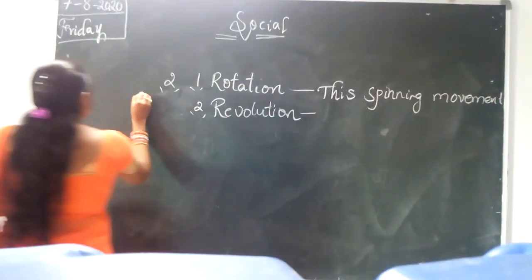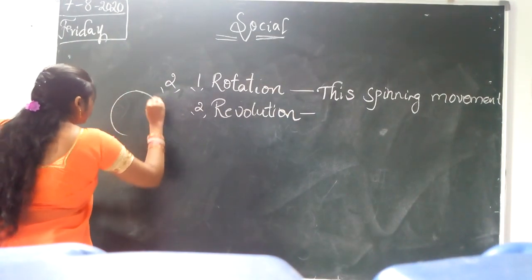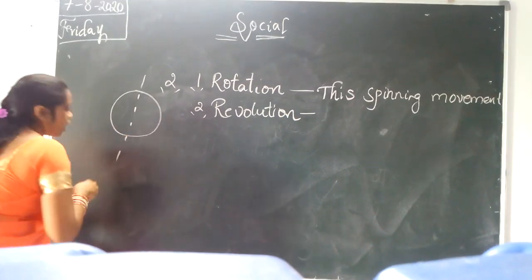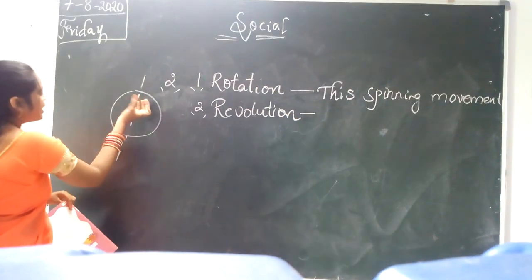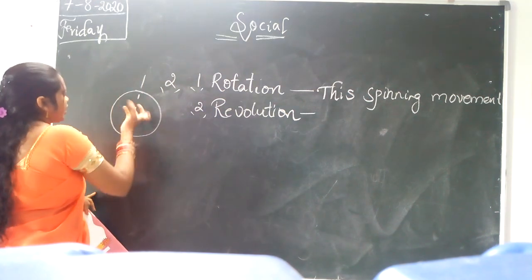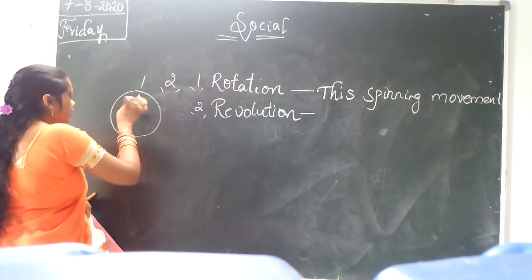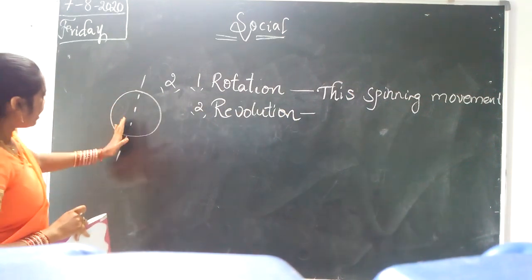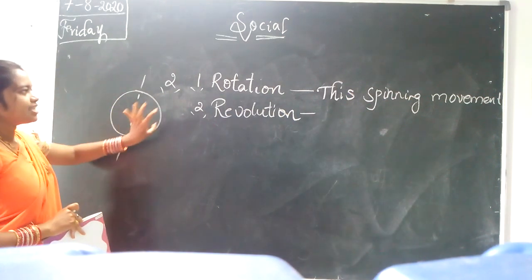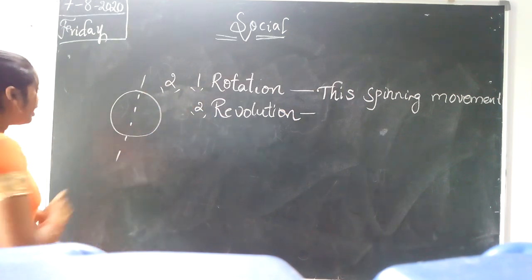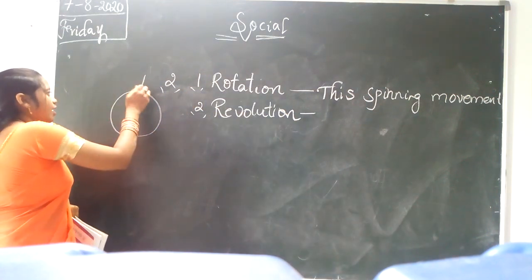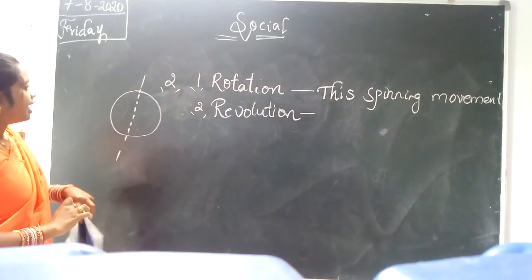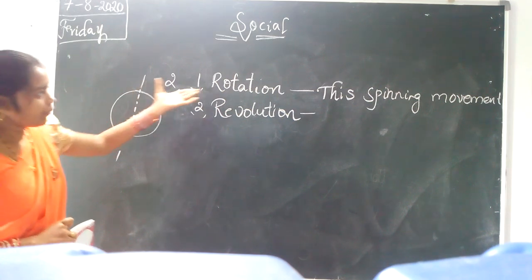Suppose this is the Earth. This is an imaginary line, and this imaginary line is called the axis. The Earth moves through this imaginary line — it turns along this imaginary line. This movement we call rotation.